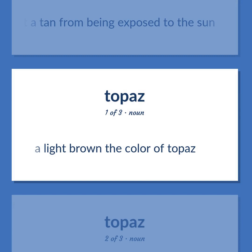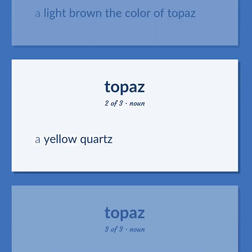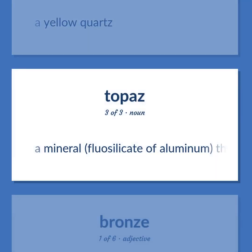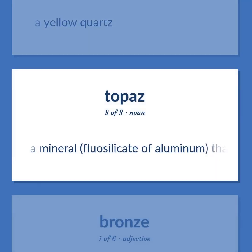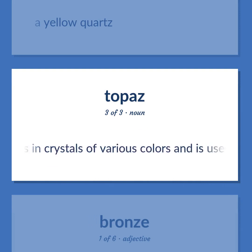Topaz: A light brown — the color of topaz. A yellow quartz. A mineral — fluosilicate of aluminum — that occurs in crystals of various colors and is used as a gemstone.